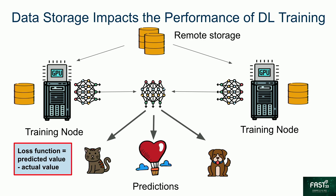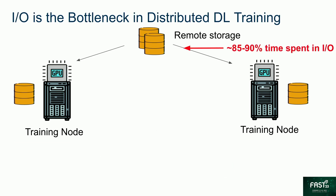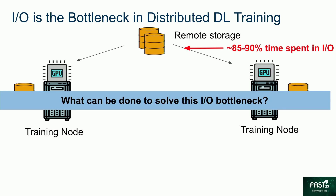This process of updating the model is known as training the model. In this whole workflow, one of the key things that matters to us is that deep learning takes time because the data storage impacts the performance of deep learning applications. In fact, it takes around 85 to 90% of the total training time to fetch the data from the remote storage. So if we could solve this I/O bottleneck, we could make deep learning remarkably faster. The real question is, what can we do to solve this I/O bottleneck?